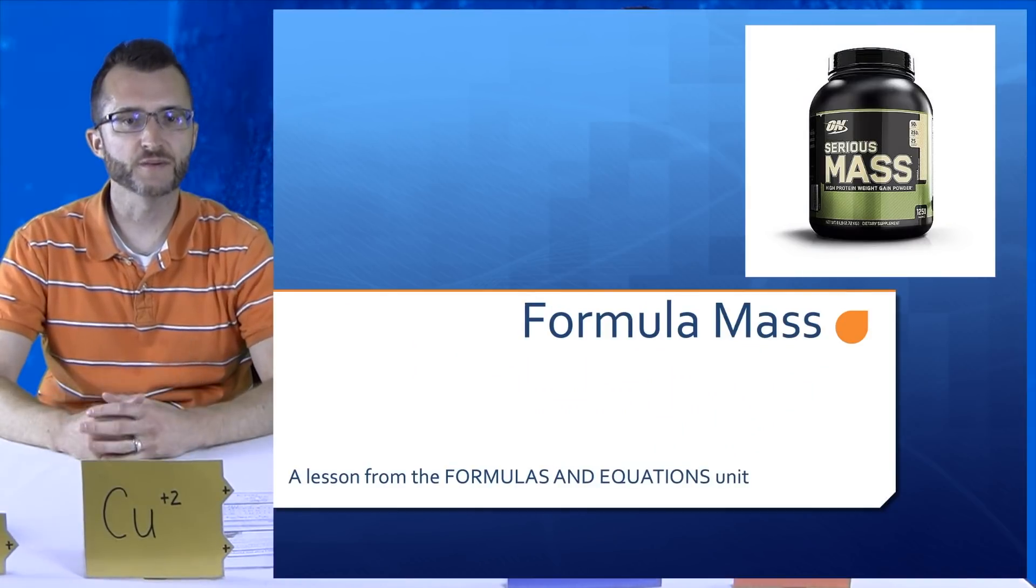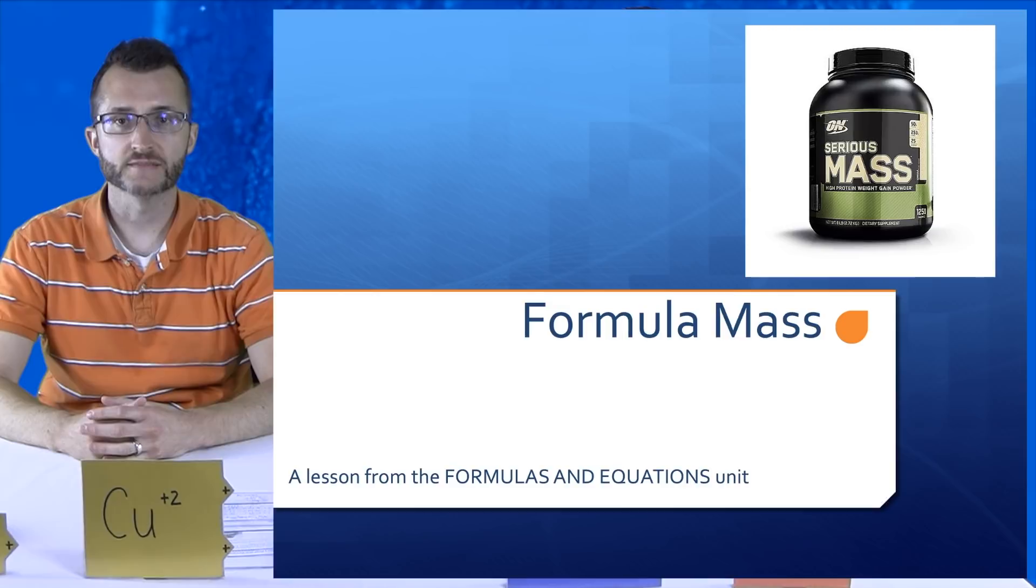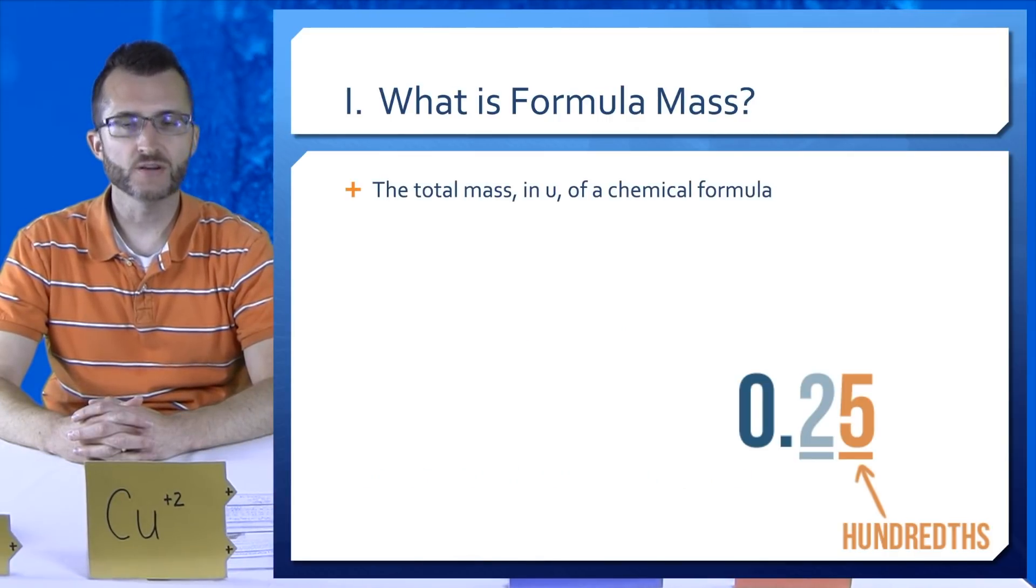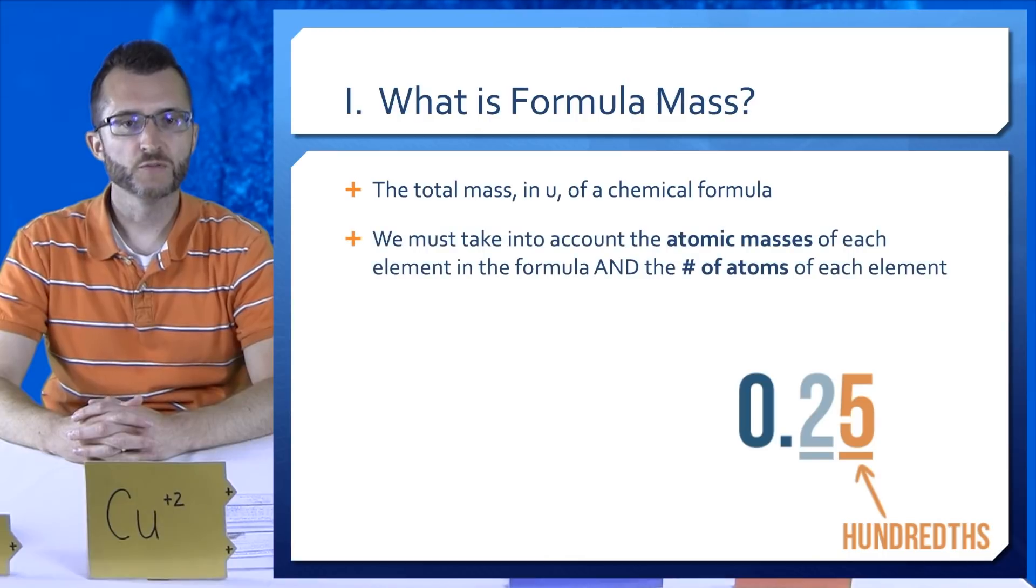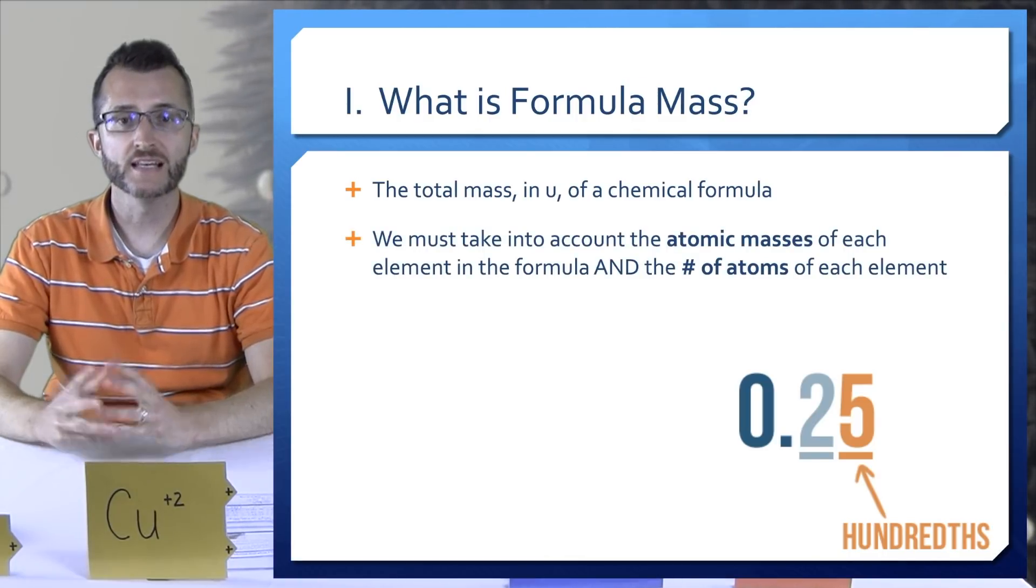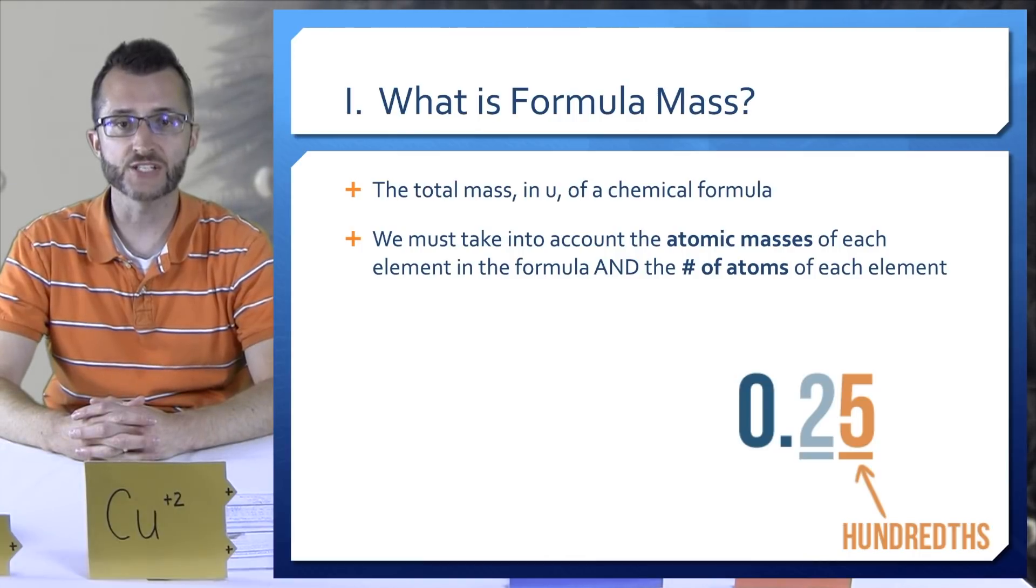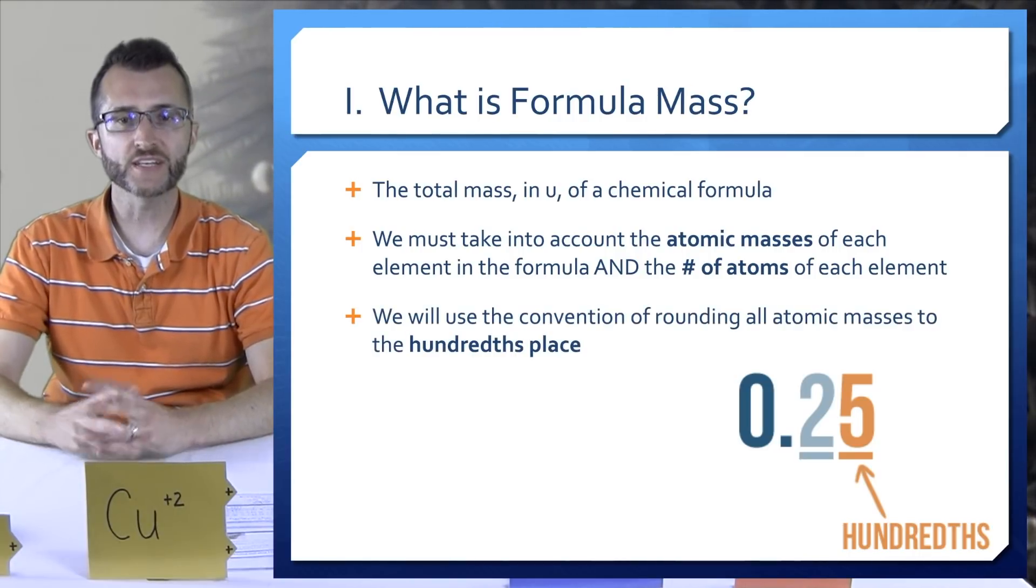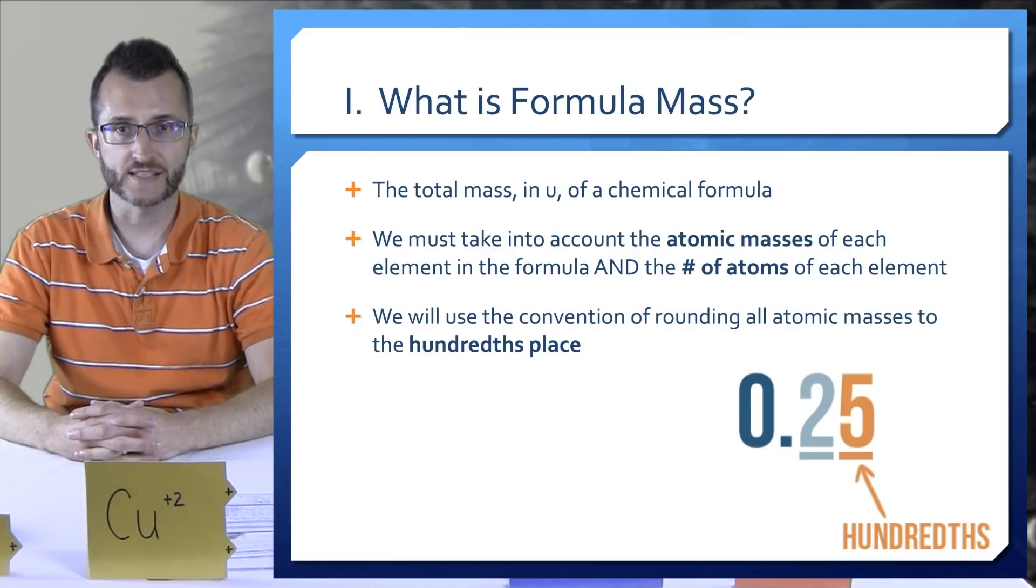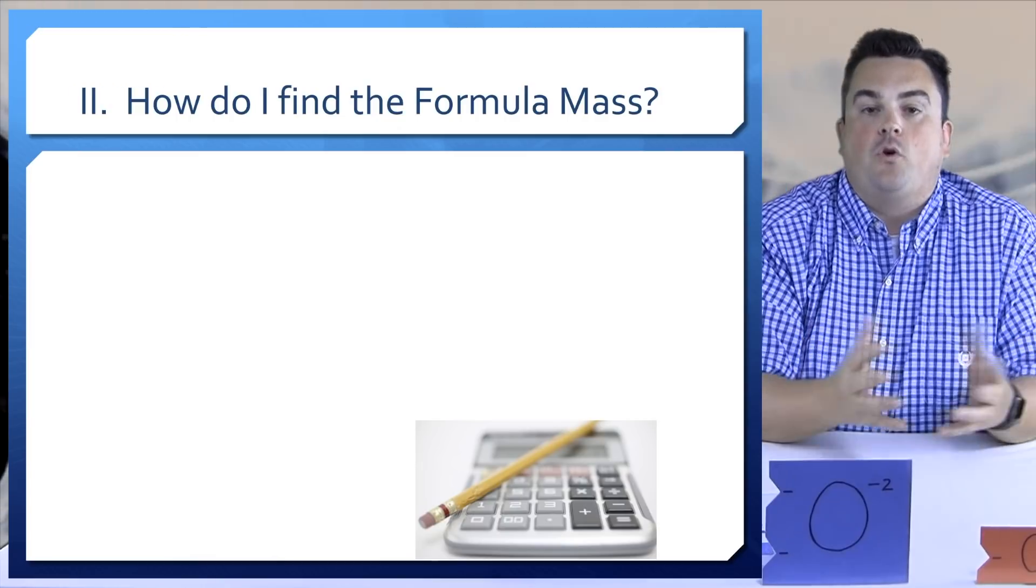Formula mass, a lesson from the formulas and equations unit. What is formula mass? The total mass in U of a chemical formula. We must take into account the atomic masses of each element in the formula and the number of atoms of each element. We will use the convention of rounding all atomic masses to the hundredths place. Two decimal places!